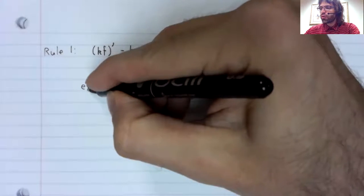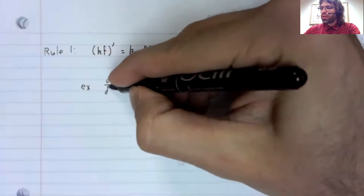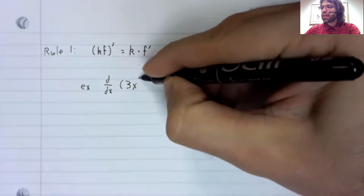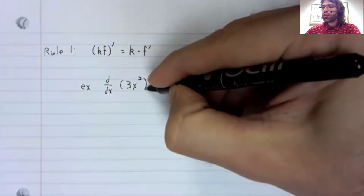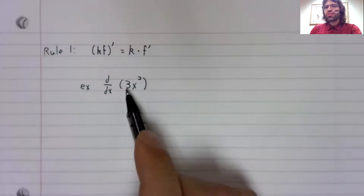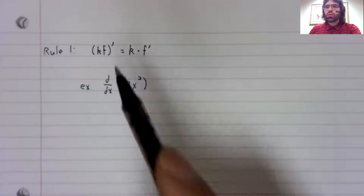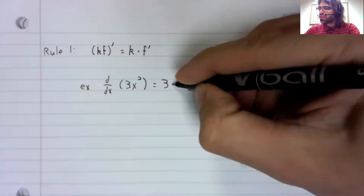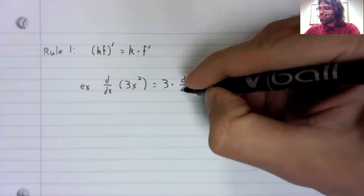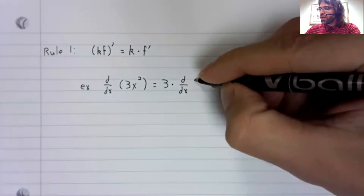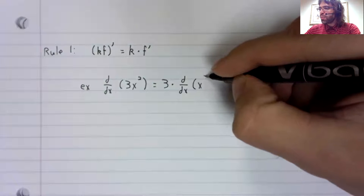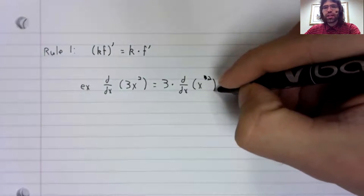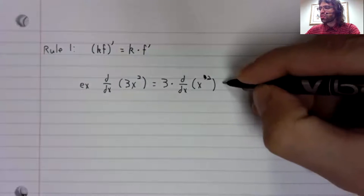For example, if we want to differentiate 3x², this 3 is a constant, and what this rule says is that you can pull it out of the derivative. The derivative of 3x² is 3 times the derivative of x².